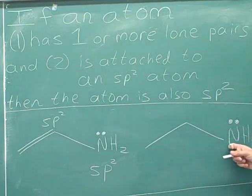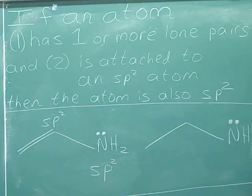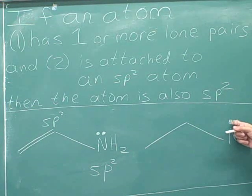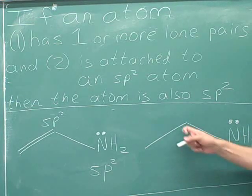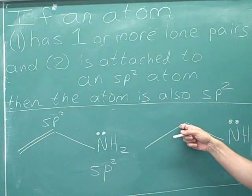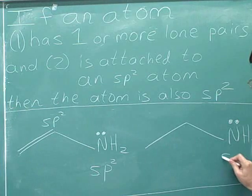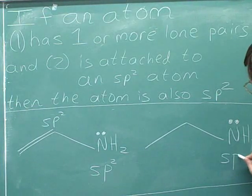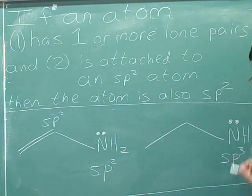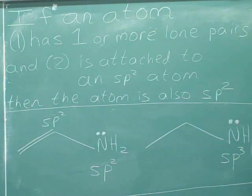What's the hybridization of this nitrogen? We have a lone pair, but we're not attached to an sp2 atom — we're attached to an sp3 atom — so the exception does not apply, and this is a normal sp3 nitrogen using our normal rule.